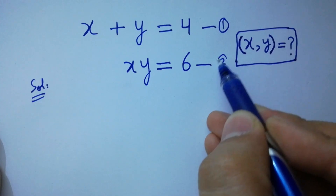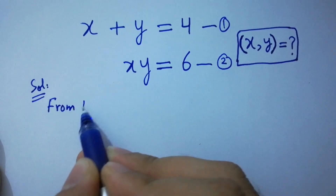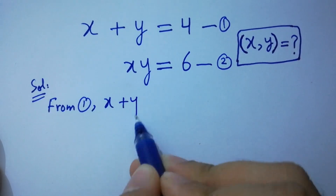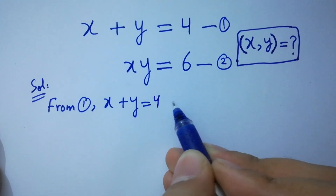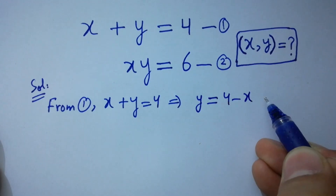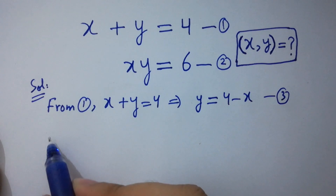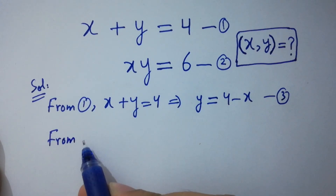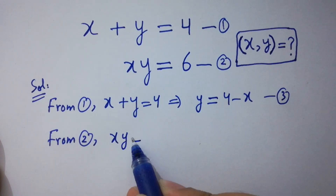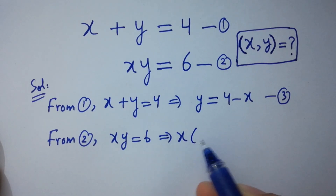From the first equation, x plus y equals 4, so y equals 4 minus x. Let this be the third equation. From the second equation xy equals 6, substitute the value of y.